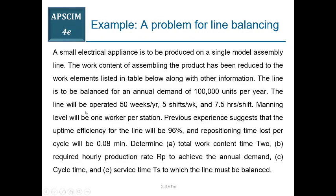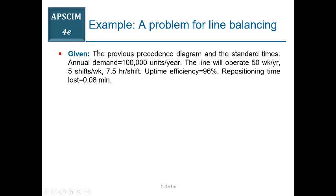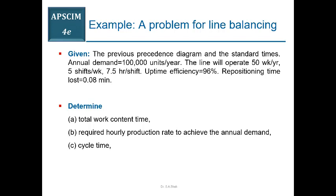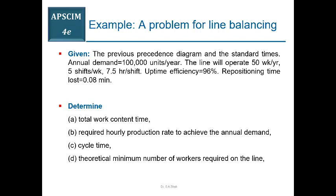The problem gives annual demand and available time including uptime efficiency with line losses and repositioning time. You have to determine: total work content time, required hourly production rate, cycle time, the theoretical minimum number of workers, and finally service time.